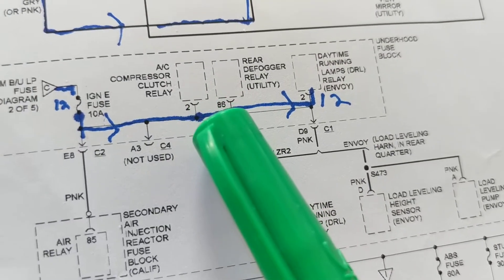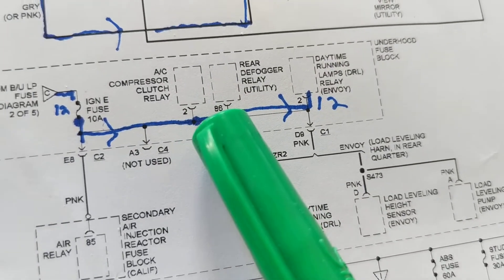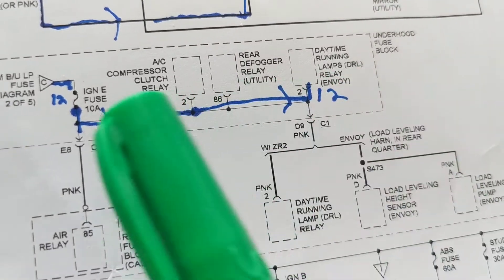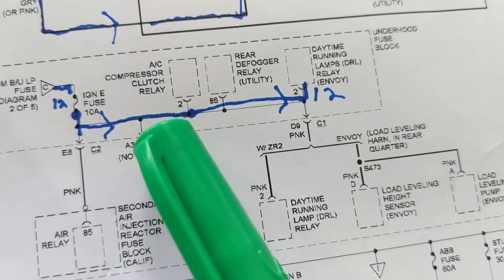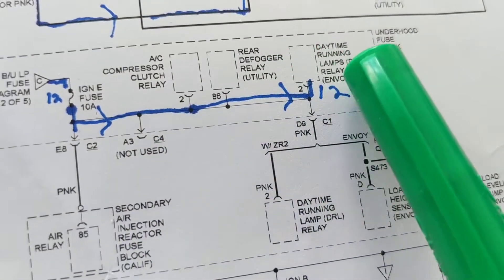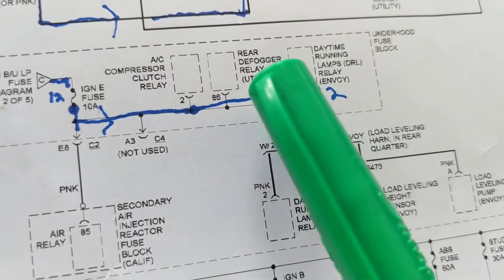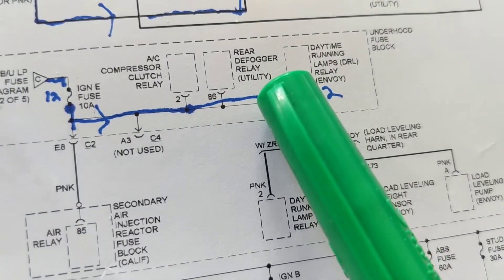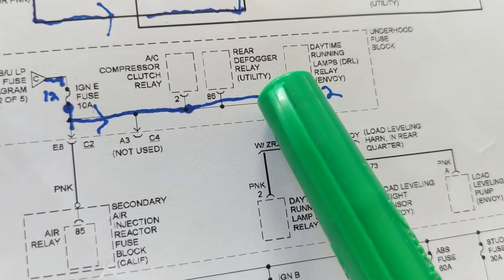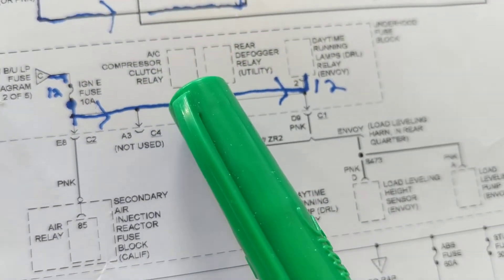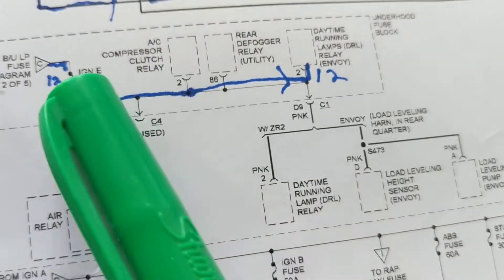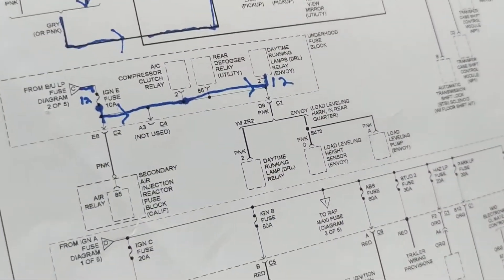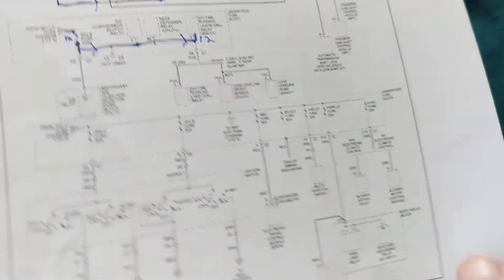So here's the diagnostic value: if the AC compressor clutch relay doesn't work but the daytime running lamps do work, the fuse has to be good. Or if you have a utility or Envoy where the rear defogger relay is working but the AC compressor clutch relay isn't, you know the fuse is good. That's how you use shared-fuse logic to narrow down your diagnosis.